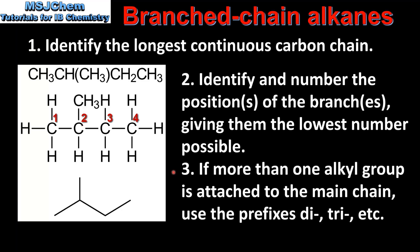The last step: if more than one alkyl group is attached to the main carbon chain, we use the prefixes di, tri, etc. In this example we only have one branch so these prefixes are not necessary. The name of this branched alkane is 2-methylbutane. The number 2 refers to the position of the methyl group on the longest carbon chain. The stem of the name is butane because the longest continuous carbon chain is 4 carbon atoms.